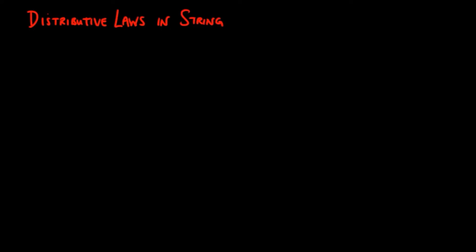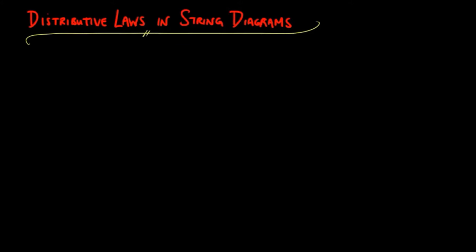Last time we introduced distributive laws and proved that they yield a monadic structure on the composition of the endofunctors involved. In this video, we do the same in terms of string diagrams.